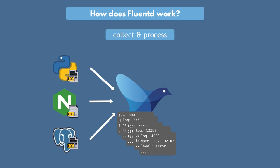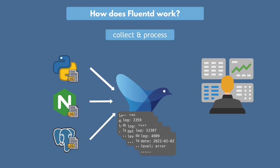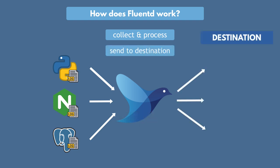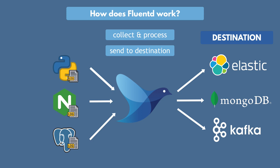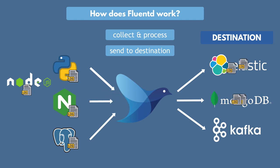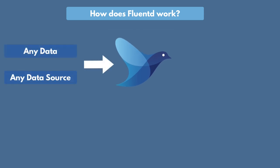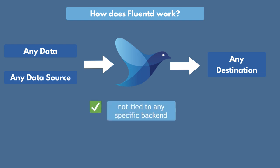What happens to these logs after Fluentd processes them? Obviously, in most cases the goal is to nicely visualize them so we can do some analysis on it. Fluentd can send these logs to any destination you want — this could be Elasticsearch, MongoDB, S3, Kafka, etc. What if you want your Python application logs to go to MongoDB for data analysis and all other application logs to go to Elasticsearch? Or what if you want Node.js logs to also go to MongoDB in addition to Elasticsearch? You can very easily configure that routing in Fluentd, which gives you great flexibility compared to alternative tools. So you can send any data from any data source to any destination or storage, and this flexibility comes from the fact that Fluentd is not tied to any particular backend.